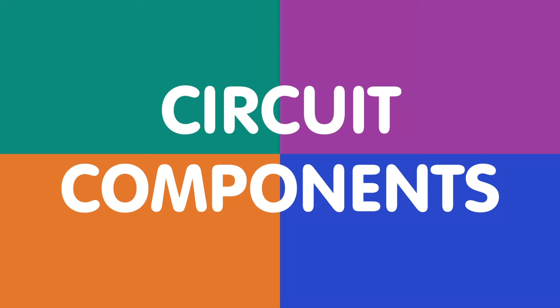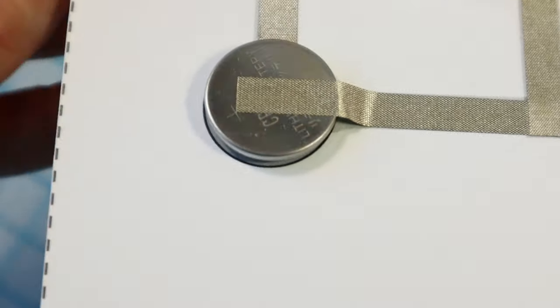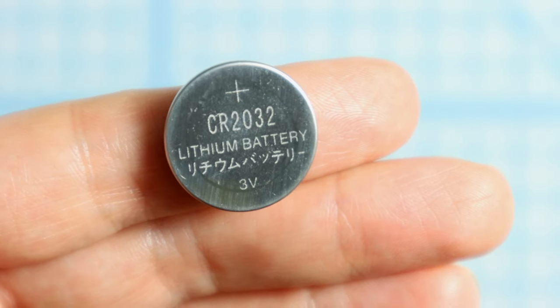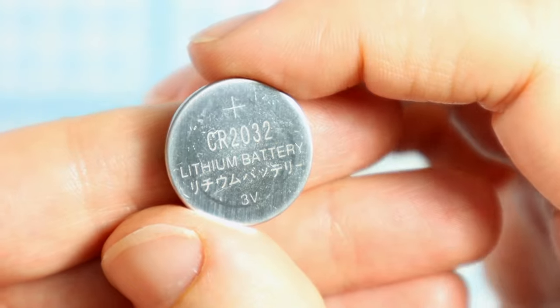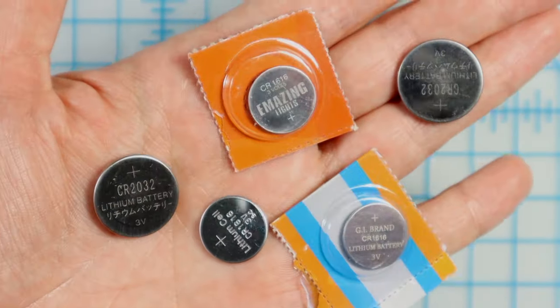Circuits have four main components: a power source, wire, outputs, and inputs. For paper circuits, we use coin cell batteries as a power source because they're small and flat. We typically use CR2032 batteries because they're very common, but any 3 volt coin cell battery should work.